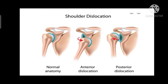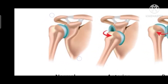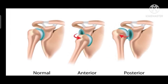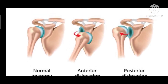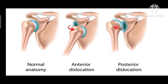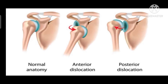Shoulder dislocation can be seen in the diagram showing normal, anterior, and posterior dislocation. If the head of the humerus goes to the front side, that is called anterior dislocation. If it moves away from the glenoid cavity posteriorly, that is called posterior dislocation.